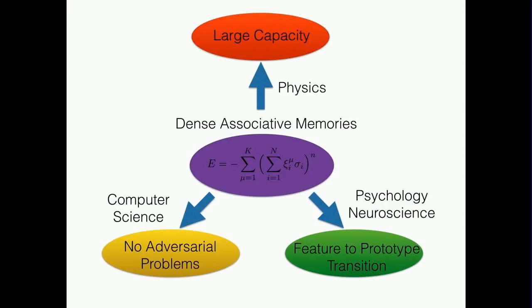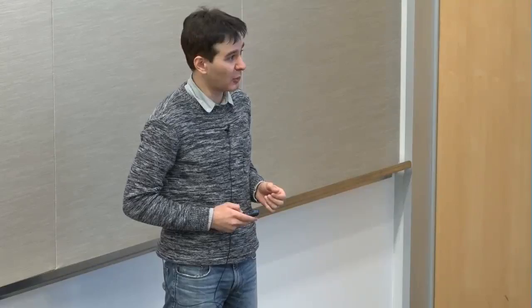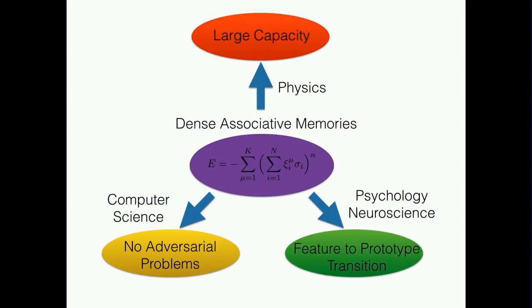In conclusion, dense associative memories have three interesting properties: from a statistical mechanics perspective, much larger memory capacity than standard models; from a computer science perspective, greater robustness to adversarial inputs; and from a psychology/neuroscience perspective, a feature-to-prototype transition regulated by the power of nonlinearity n. Code is available on GitHub.